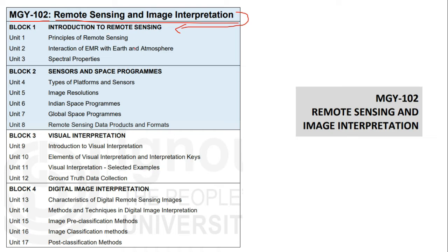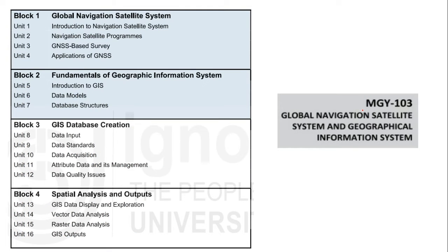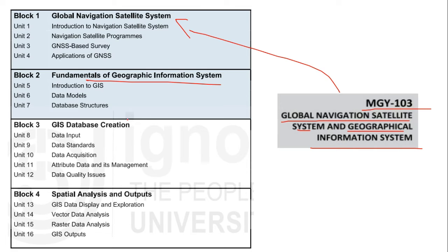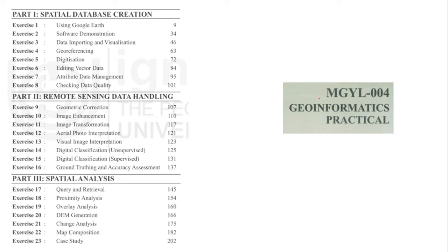The third subject in Semester 1 is MGY103, covering the Global Navigation Satellite System and Geographic Information System. Within this, we will discuss the genesis and fundamentals of GIS, GIS database creation, spatial analysis, and outputs.